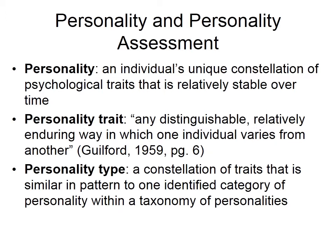Personality is an individual's unique constellation of psychological traits that is relatively stable over time. The measurement of personality has been a major part of psychometrics. We're in a course on psychological tests and measurements, and whenever we're using psychological tests, we're trying to quantify the differences between people. Personality is one way to do that. Personality traits are any distinguishable, relatively enduring way in which one individual varies from another — think of them as individual constructs within personality.